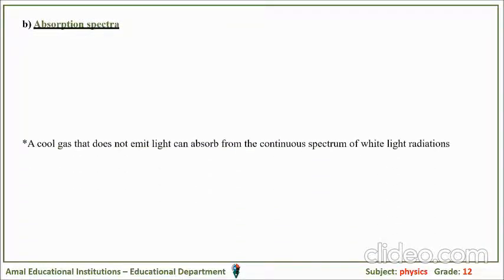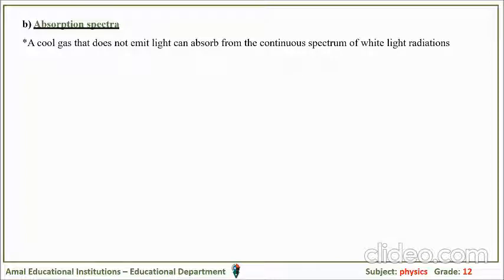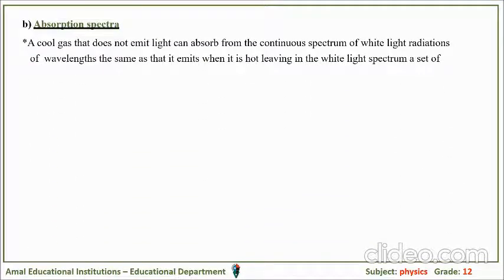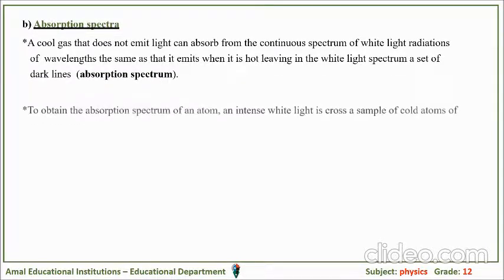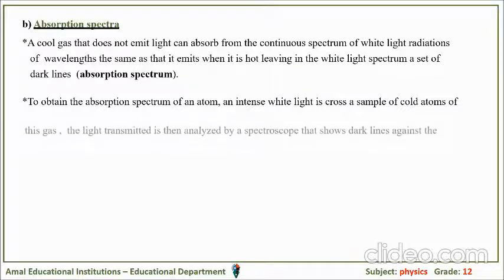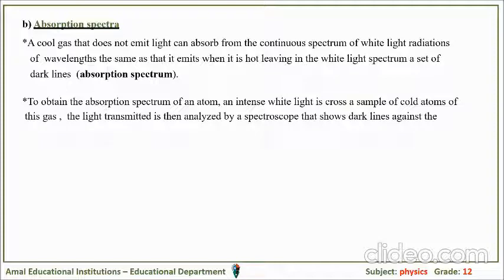For the absorption spectrum: a cool gas that does not emit light can absorb from the continuous spectrum of white light at the same wavelengths that it emits when hot, leaving dark lines called the absorption spectrum. To obtain the absorption spectrum of an atom, an intense white light is passed through a sample of cold atoms of the gas, and the transmitted light is then analyzed by the spectroscope, showing dark lines against the continuous white light spectrum.